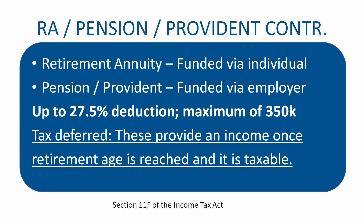The retirement annuity is funded by you — you can buy one with a financial institution. Alternatively, you can contribute to a pension or provident fund via your employer. Often it's a requirement that you must be part of a pension or provident fund. When you make these contributions you can contribute up to 27.5% of your income, which is the limit of your deduction, to a maximum of R350,000 per tax year.